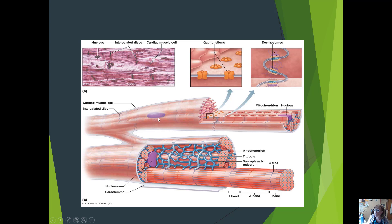The nucleus in cardiomyocytes is located between the myofibrils, not as peripheral as in skeletal muscle, and each cardiomyocyte has a single nucleus, whereas a skeletal muscle fiber has many nuclei. Regarding T-tubules, cardiac muscle has a dyad — one T-tubule paired with one terminal cisterna — rather than the triad found in skeletal muscle. It still has sarcoplasmic reticulum to store calcium.